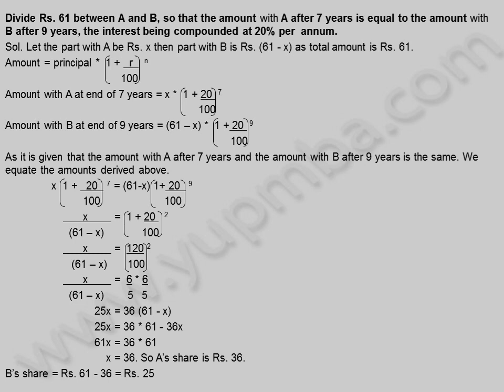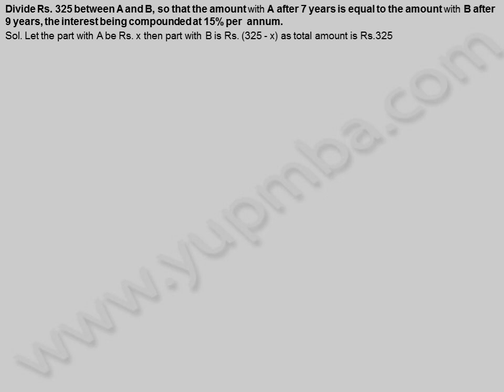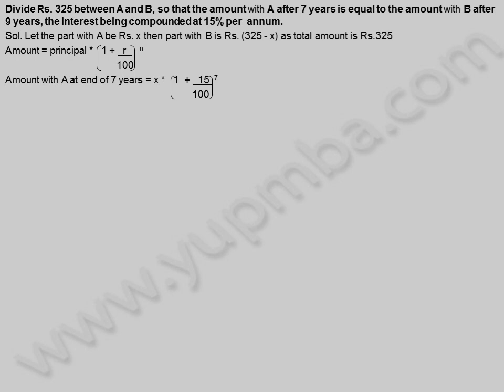Let us see another example. Divide 325 rupees between A and B, so that the amount with A after 7 years is equal to the amount with B after 9 years, the interest being compounded at 15% per annum. Solution: let the part with A be X rupees, then part with B is 325 minus X rupees, as total amount is 325 rupees. Amount with A at end of 7 years is equal to X into 1 plus 15 by 100 whole power 7.